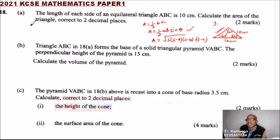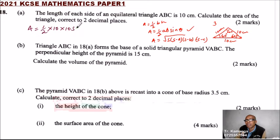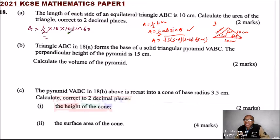So we say: area equals half multiplied by a·b. Because the sides are equal, we have 10 multiplied by 10, multiplied by sine of 60. We can simplify: half of 10 is 5, so it is 5 times 10 times sine of 60.